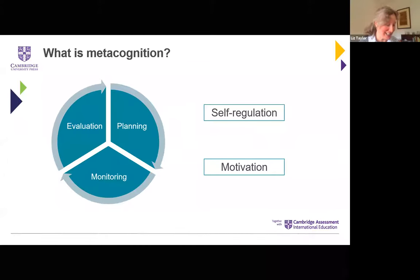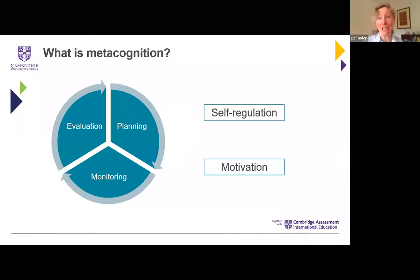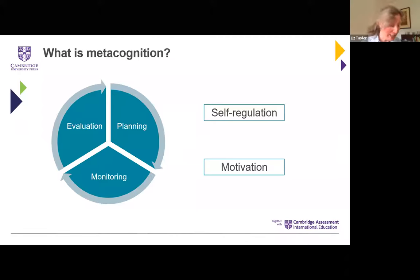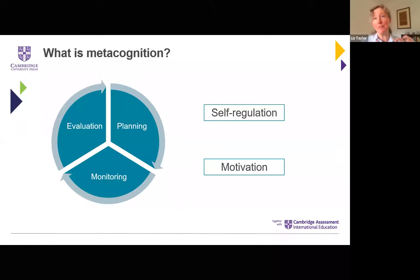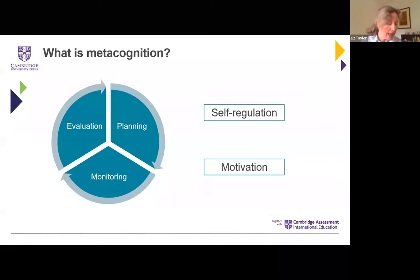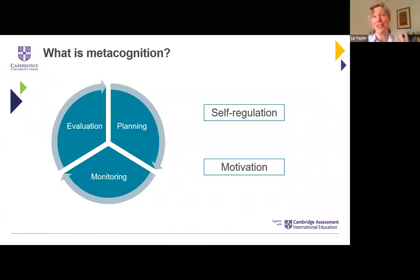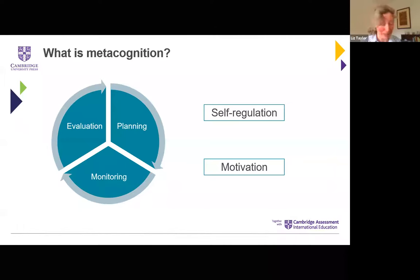Let's look at those three stages in a little more detail: planning, monitoring and evaluating. Two other big terms interact with metacognition. The first is self-regulation, which I'll take as the broader umbrella term. Self-regulation involves metacognition — thinking about learning — but also cognition, just the learning itself and the strategies we use, as well as motivation.